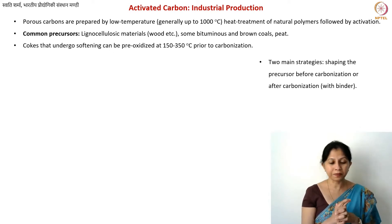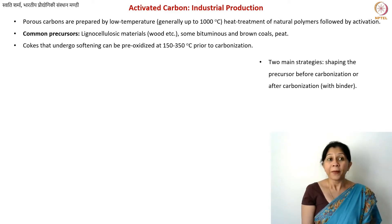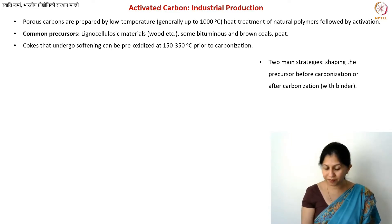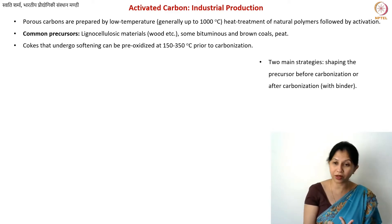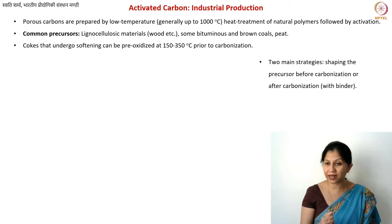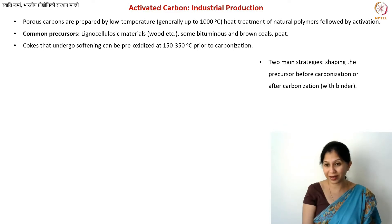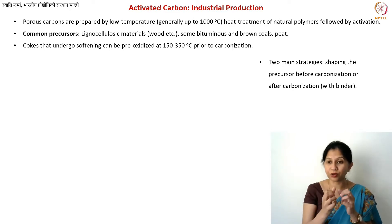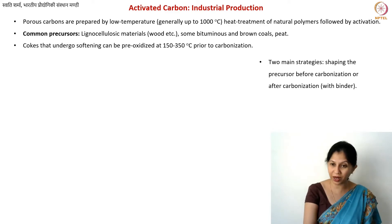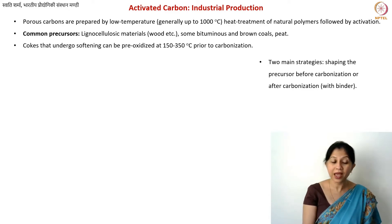There are two main strategies. Either you can make the pellets before carbonization itself, or you can make them afterwards. If you think about graphite-related manufacturing or glass-like carbon, we always provide the shape before the final carbonization step, because once it is carbonized it becomes more difficult to shape. This is precisely what we also do in the case of activated carbon — we give the shape beforehand, take the precursor, make cylinders, and then carbonize them.